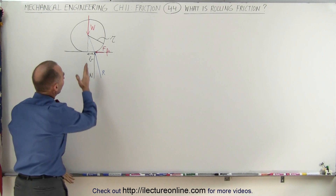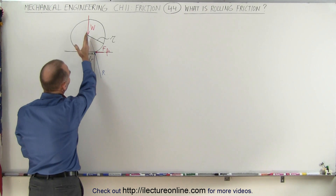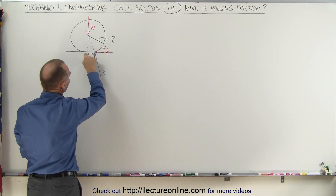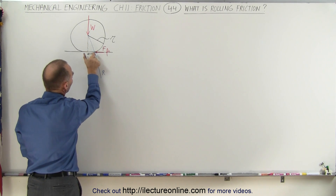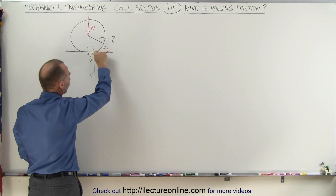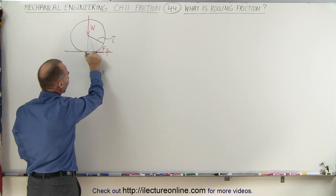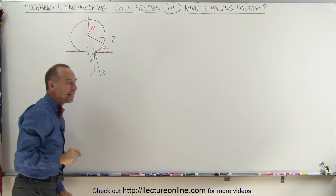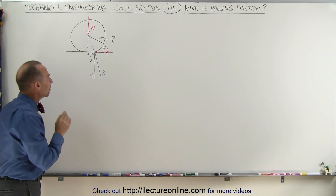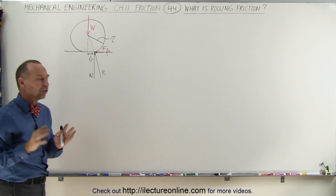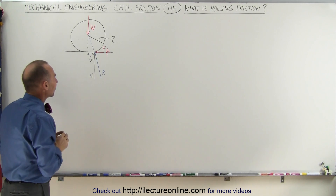The distance from the point directly below the center of the axle to where the tire or wheel no longer touches the surface — let's call that B. And that is also considered to be the coefficient of rolling friction.